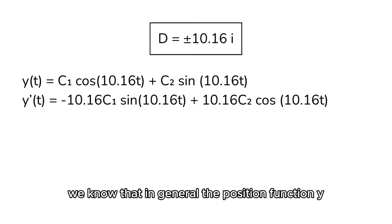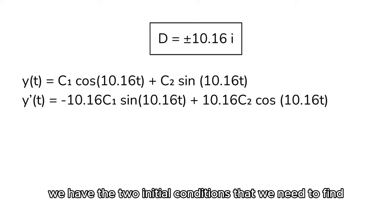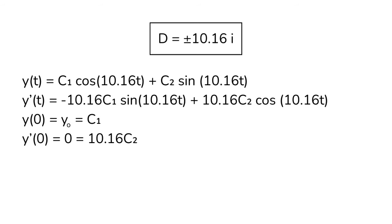We know that, in general, the position function y is going to be c1 times cosine of 10.16t plus c2 sine of 10.16t. To go ahead and differentiate, the velocity is then minus 10.16c1 sine of 10.16t plus 10.16c2 cosine of 10.16t. Alright, we have the two initial conditions that we need to find c1 and c2. When the time is zero, the position is y0. So, y of zero is y0. So, we know that c1 is y0.